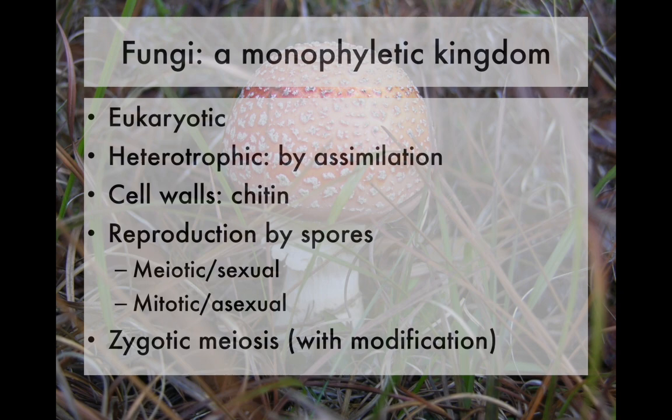Unlike animals, fungi are heterotrophic by means of assimilation. They don't have a mouth or a specialized feeding structure; instead, the entire organism can feed anywhere along its body by secreting enzymes that digest the substrate, whatever it's growing on, and bring those digested macromolecules through the cell wall into the body — very different from how animals eat.